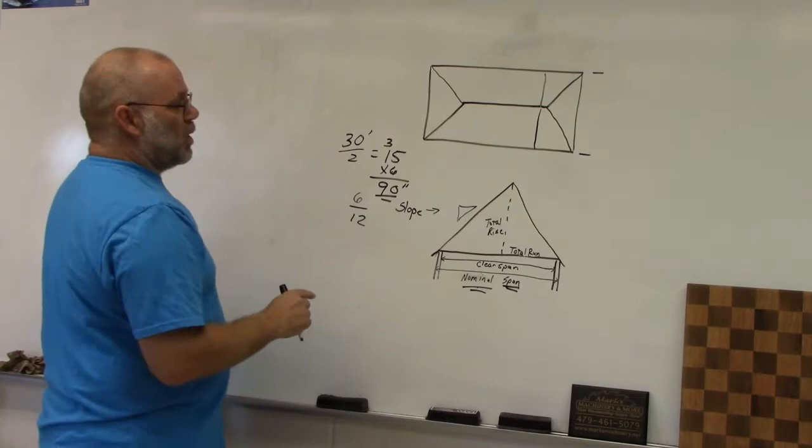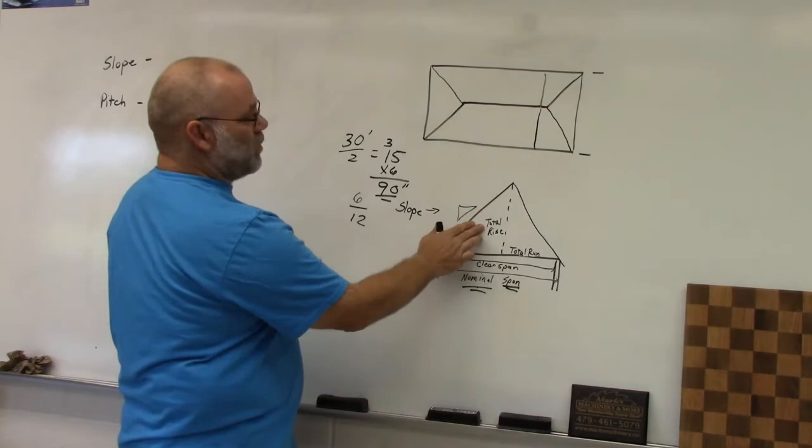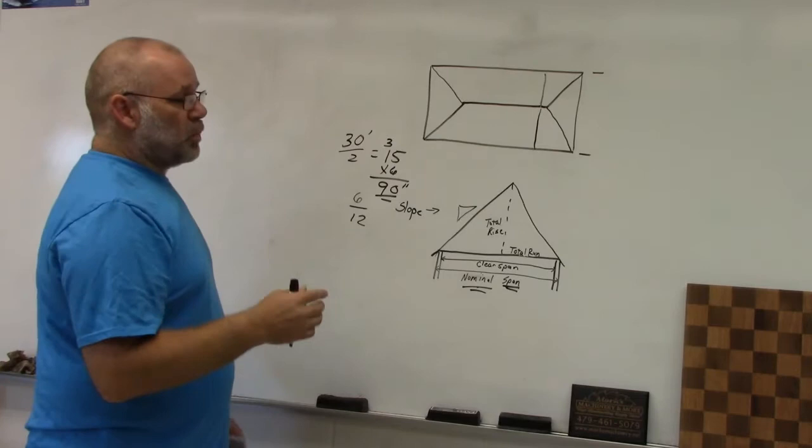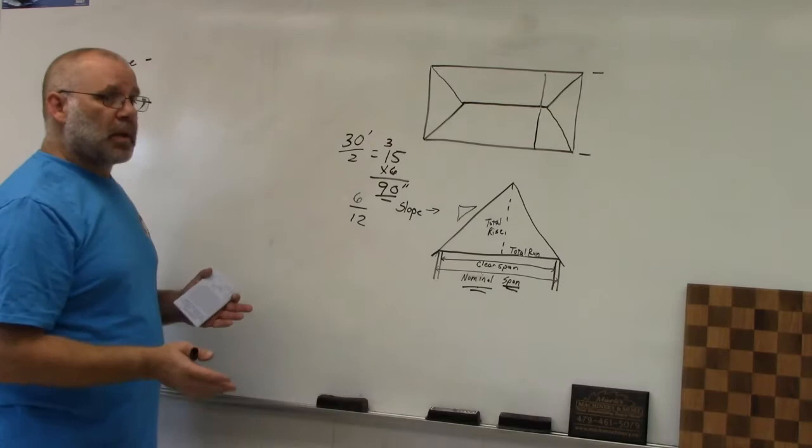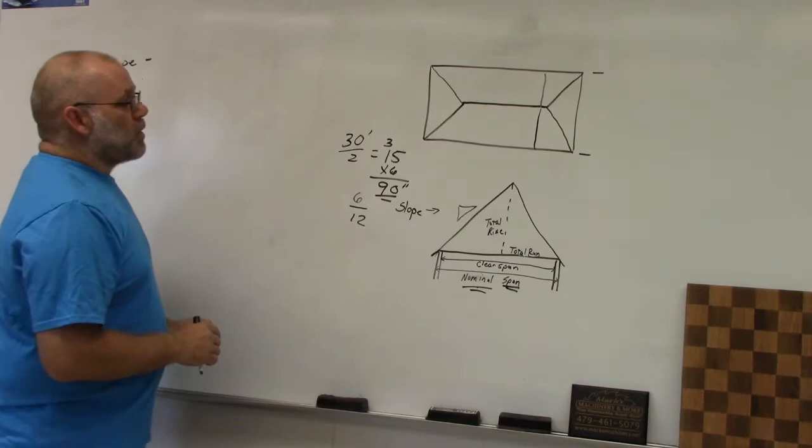Because we're using slope, the rise is in inches, while the total run was in feet. So when doing calculations, you have to remember to convert — either both in inches or both in feet — to work with those two numbers together.